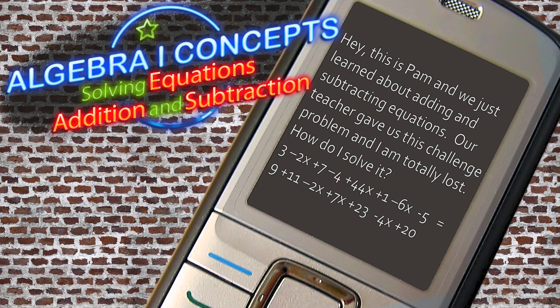Hey, this is Pam, and we just learned about adding and subtracting equations. Our teacher gave us this challenge problem, and I am totally lost. Can you help me solve it? It's 3 minus 2x plus 7, minus 4, plus 44x, plus 1, minus 6x, minus 5, equals 9 plus 11, minus 2x, plus 7x, plus 23, minus 4x, plus 20. Help!